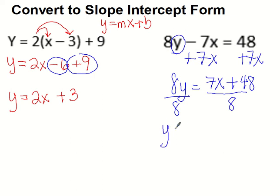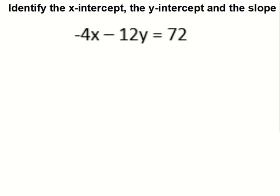And slope-intercept form becomes Y equals 7 over 8. There is my slope. Rise and run. X plus. And then 48 divided by 8 is 6.